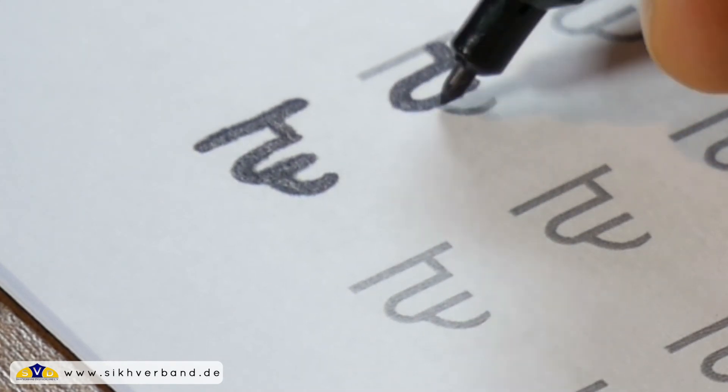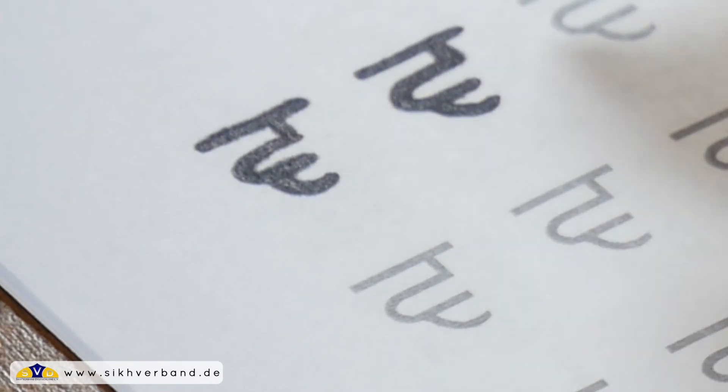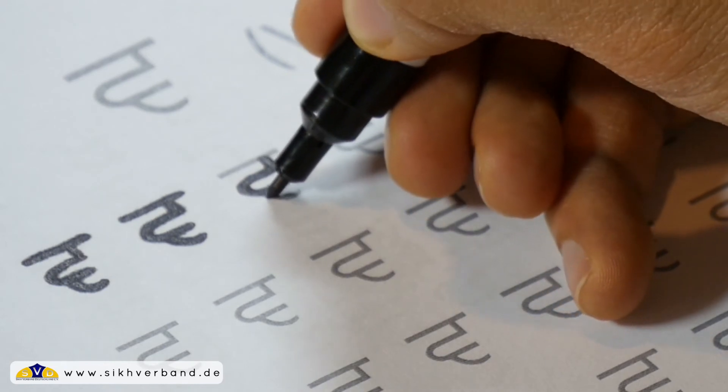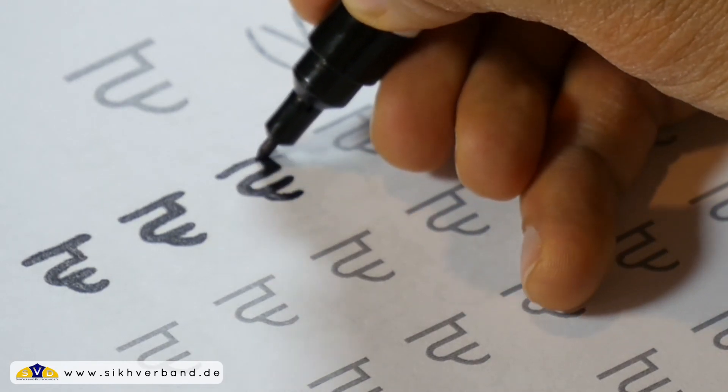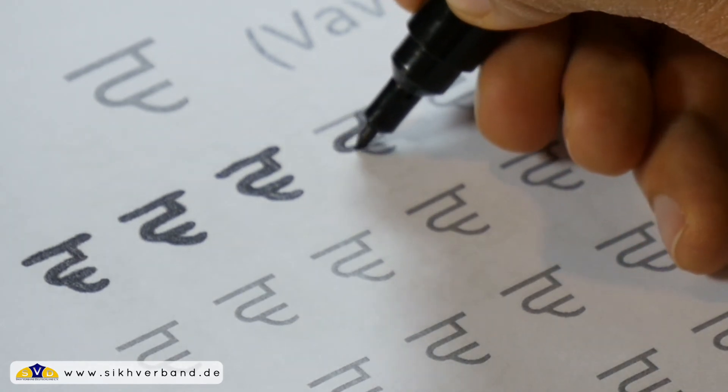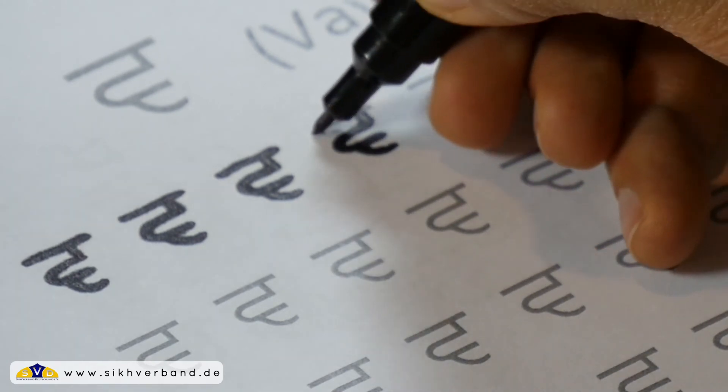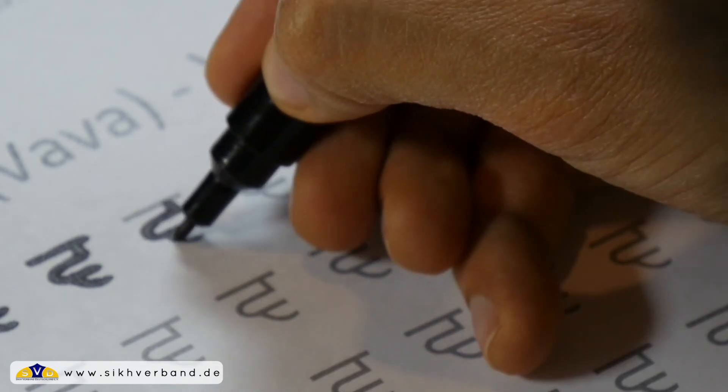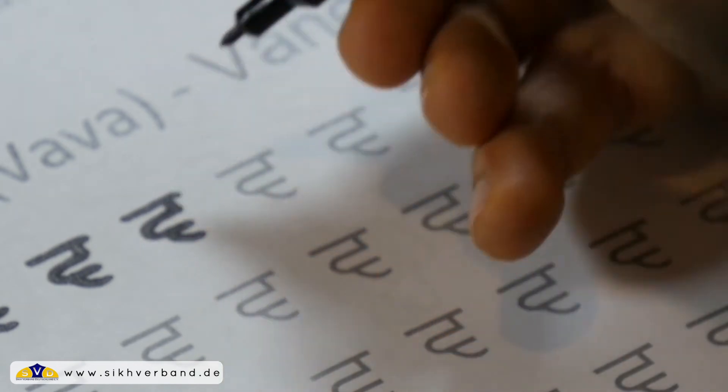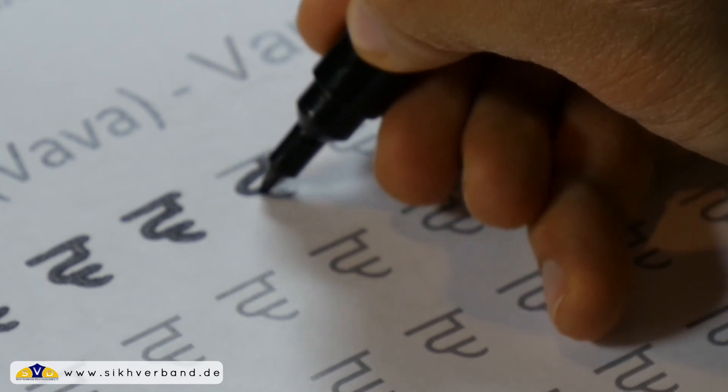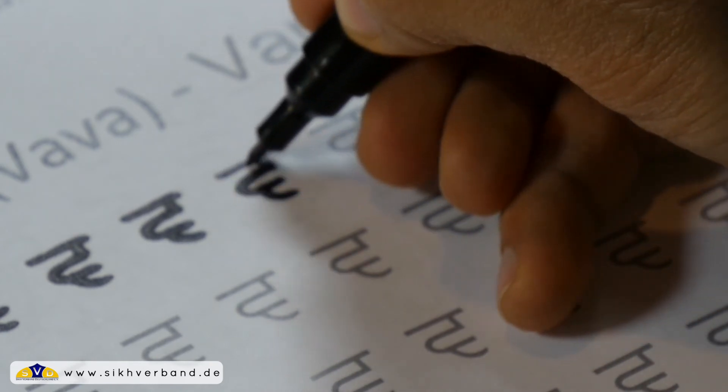Vava wie Vanessa. Der Begriff Vaheguru wird auch mit diesem Vava geschrieben. Deshalb neigen viele Gursikhs auch dazu, wenn sie im Chat sind oder wenn sie Texte verfassen, dass sie den Begriff Vaheguru auch mit V schreiben, wie bei Vanessa und nicht mit einem W. Das ist das Vava.